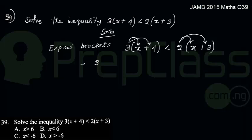3 times x, that will give me 3x. 3 times 4, that will give me 12.